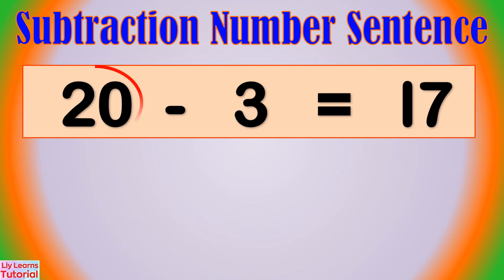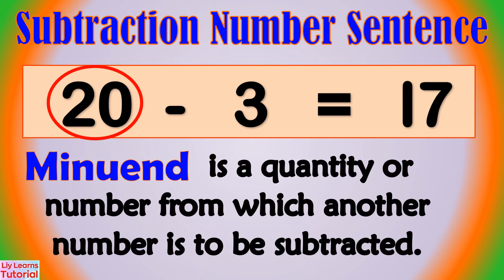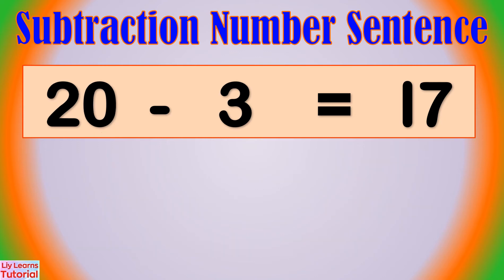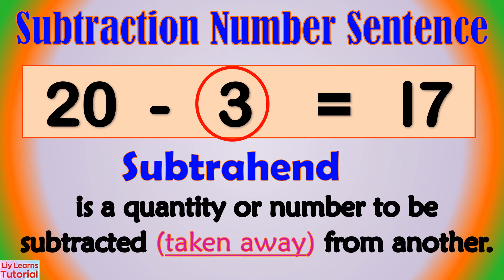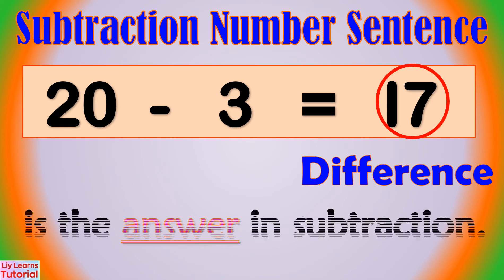This is the minuend. Minuend is a quantity or number from which another number is to be subtracted. Subtrahend is the quantity or number to be subtracted, taken away from another. The answer in subtraction is called difference.